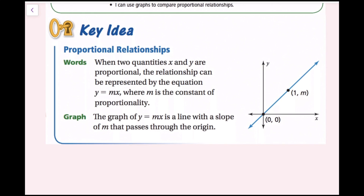When two quantities, x and y, are proportional, the relationship can be represented by the equation y equals mx, where m is the constant of proportionality.